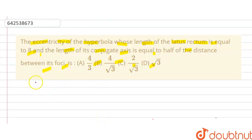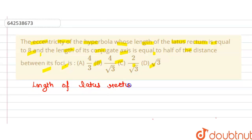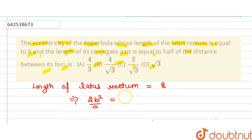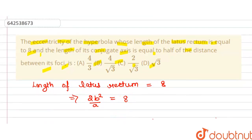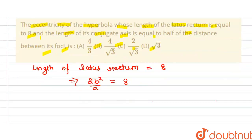The solution: length of latus rectum is equal to 8. We know that the length of latus rectum is equal to 2b²/a, and this is equal to 8. It is also given that the length of the conjugate axis is equal to half of the distance between the foci.